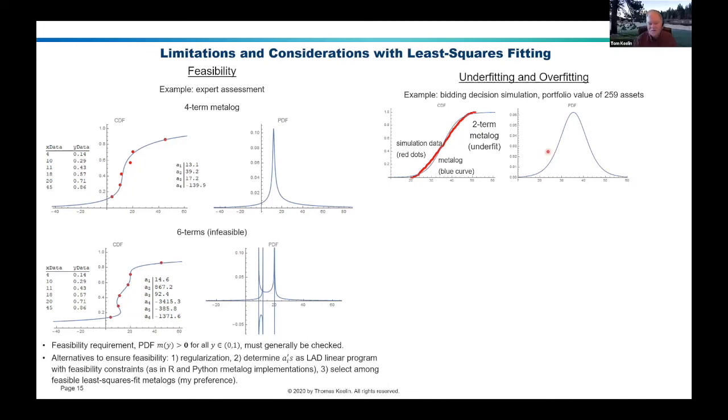So suppose I, instead of using a two-term metalog, suppose I used a five-term metalog. Well, that's interesting. That goes through the data almost exactly. It looks really good. And it comes up with a relatively interesting, very fat shape and short tails. It turns out that this is an artifact of the way I had done the simulation, but nevertheless, this fat short tailed curve is an extremely good fit relative to the simulation and gives me a visual view of what the data actually looks like.